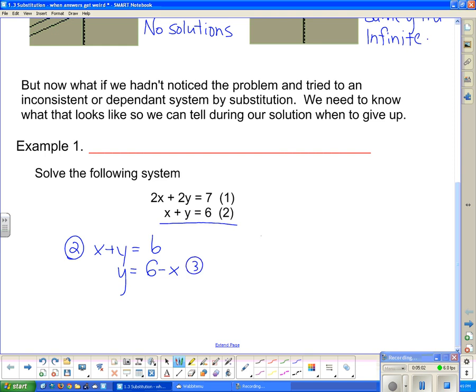Now I'm going to sub three into the equation I did not use in the first place, which is equation number one. So now I write down two x plus two y, but instead of y, I'm going to write six minus x, because equation three tells us that that's what y is. And that's going to equal seven. So that gives me two x plus twelve minus two x equals seven. So the twos, two and negative two cancel, so I'm left with twelve equals seven.